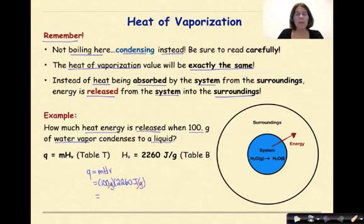And when we multiply these two values together, we get 226,000 joules of energy, which like I've said before, you can put into scientific notation, or you can leave it in standard notation.